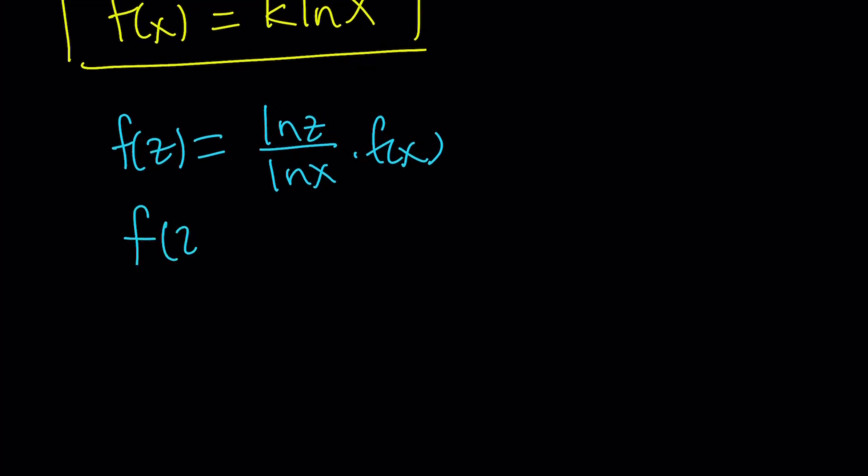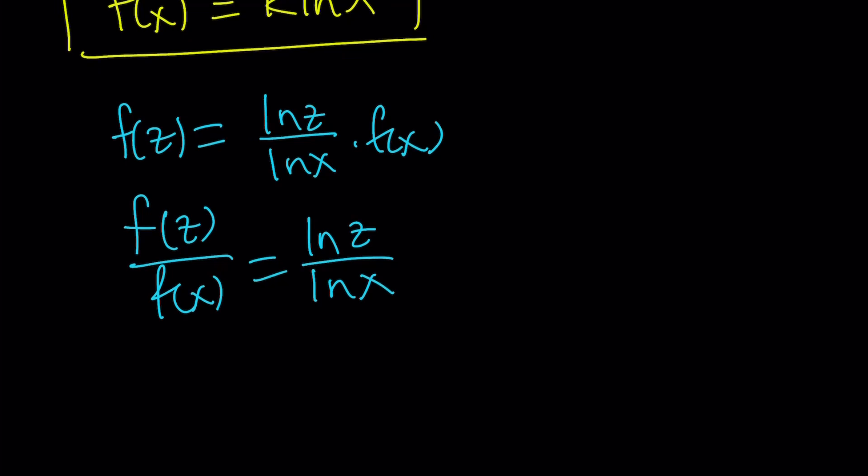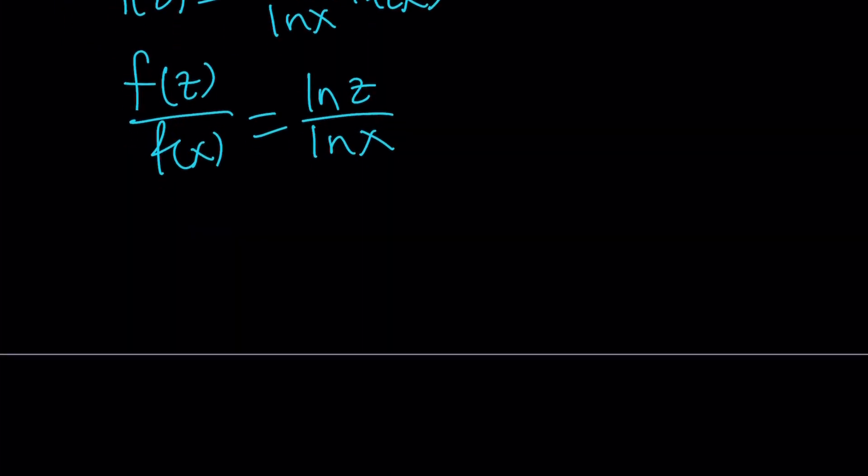So I'll write it as f of z over f of x equals ln z over ln x. Now, what does this tell you? This tells you that ln z and ln x are proportional.